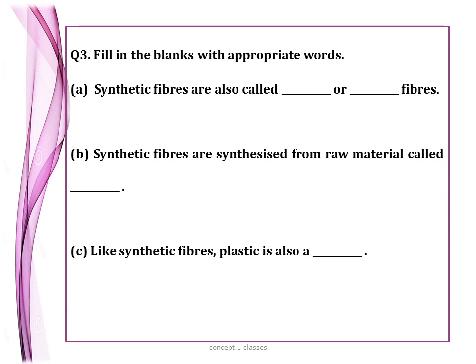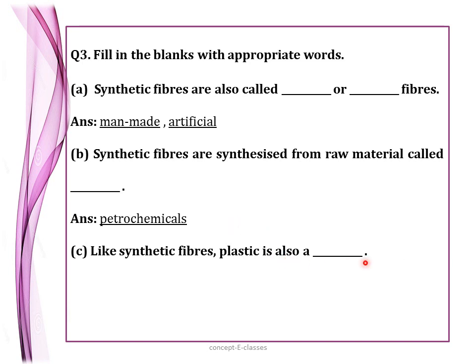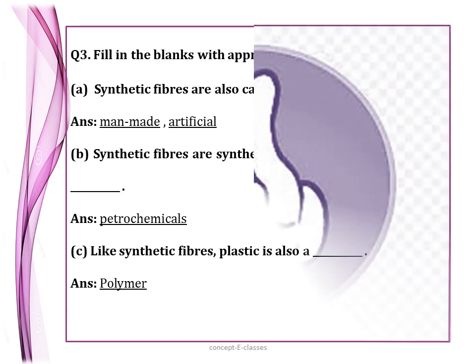Question number three — fill in the blanks: synthetic fibers are also called man-made fibers or artificial fibers. Synthetic fibers are synthesized from raw materials called petrochemicals, which are raw products of petroleum. Like synthetic fiber, plastic is also a polymer.